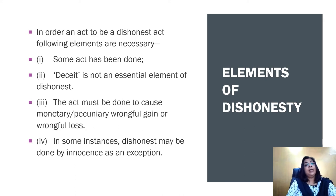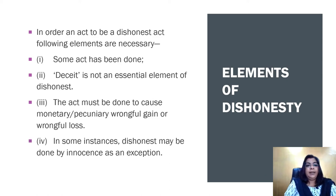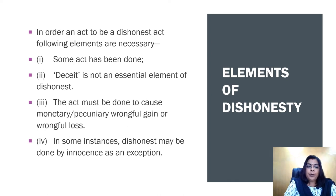And the last element: in some instances, dishonesty may be done by innocence, but this is as an exception. There are very few cases where we can take dishonesty as an exception under the innocence category. For example, if I took money from you intending to return it, but due to some unavoidable reason I could not return it — then as an exception, that person may be considered innocent. But this is rare. If someone knowingly took money or transferred property to cause wrongful loss to one and wrongful gain to another, that falls under dishonesty — but exceptions are possible.